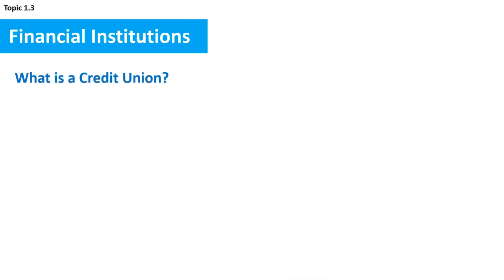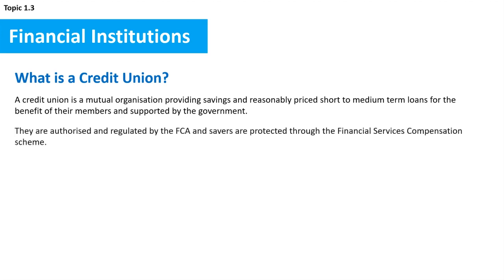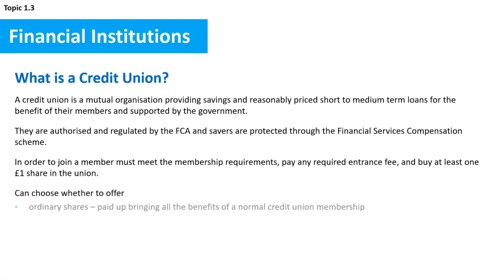A credit union is a mutual organisation generally operating as an alternative to loan sharks, providing savings and reasonably priced short- to medium-term loans for the benefit of their members, supported by the government through a number of initiatives and enacted legislation. They are authorised and regulated by the FCA, and savers are protected through the Financial Services Compensation Scheme. To join, a member must meet membership requirements, pay any required entrance fee, and buy at least one £1 share in the union. Credit unions can offer ordinary shares, bringing all the benefits of normal membership, or deferred shares, which are only payable in special circumstances.